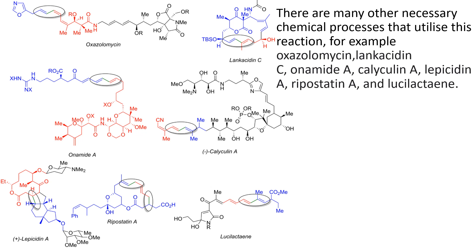I've only spoken about a few select examples of where this reaction is utilized in industry — there are many examples worldwide. From top left we have a few more examples: oxazolomycin, lachacidine C onamide A, calicheamicin A, lepicidin A, and rapastatin A, going from top left to bottom right in order.